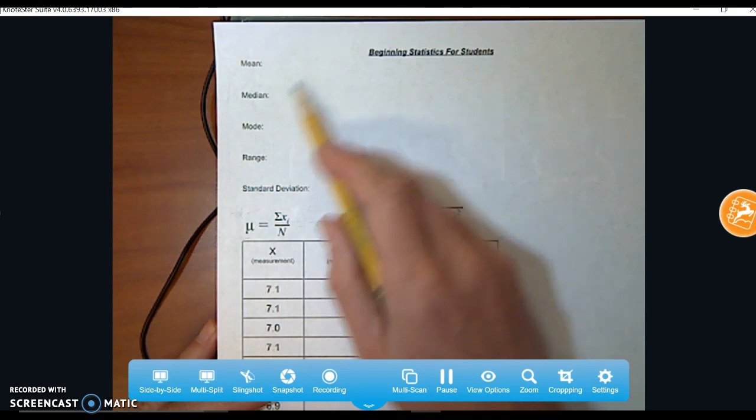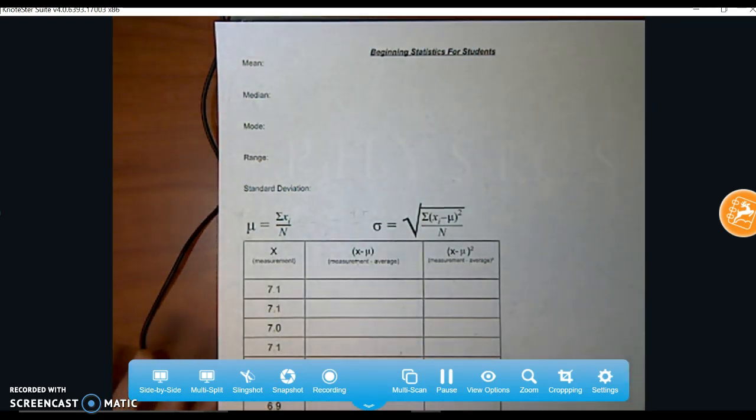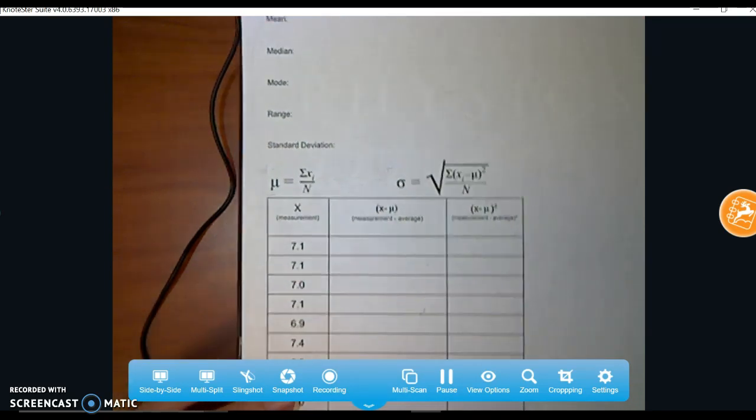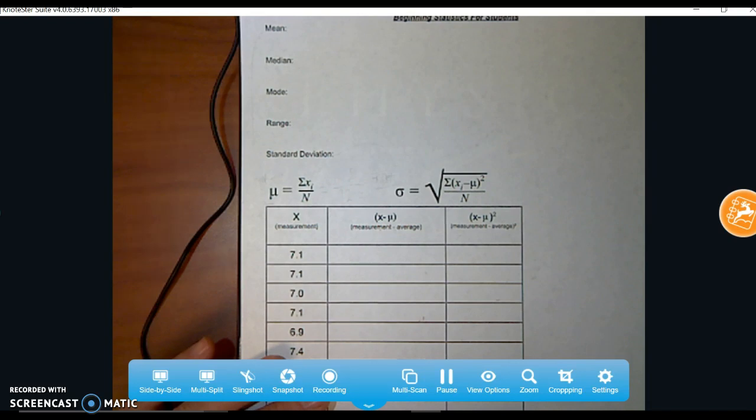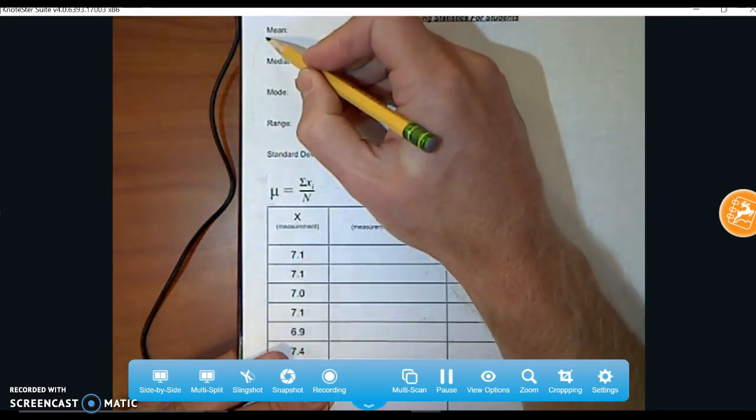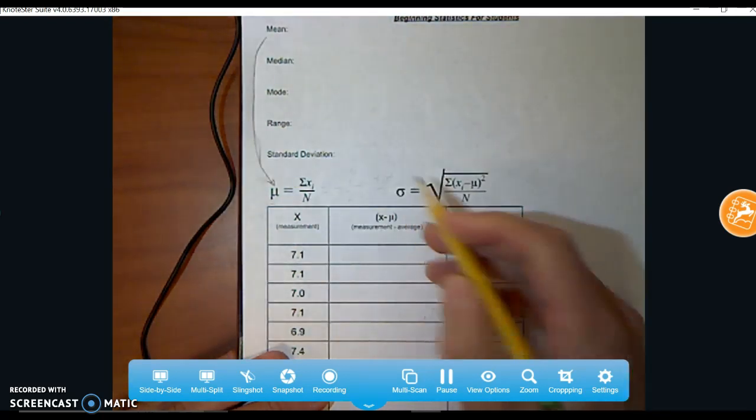We're going to apply those definitions we just wrote down to this data set. And you'll see there's a couple of equations here, and they could look kind of intimidating maybe to new students. But they just have Greek letters in them for doing relatively simple things. This one right here, mu, that's the mean or the average.